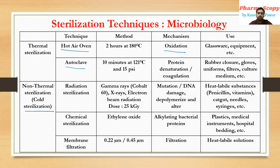Due to moist heat, the proteins present in the microbes undergo coagulation or denaturation, giving us a sterilized product. The autoclave can be used to sterilize rubber closures, gloves, uniforms, filters, culture media, and so on. In our microbiology practicals, we sterilize culture media by autoclaving at 10 minutes, 121 degrees Celsius, and 15 psi.